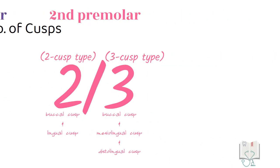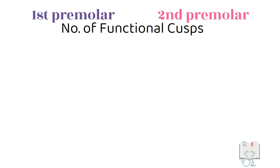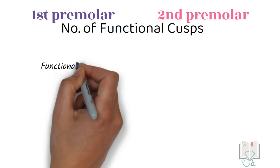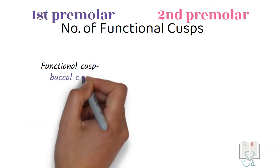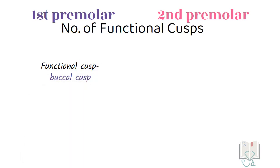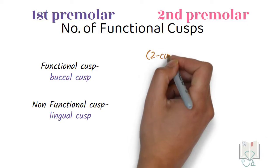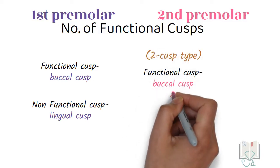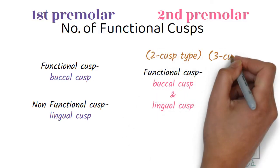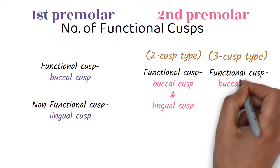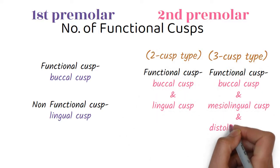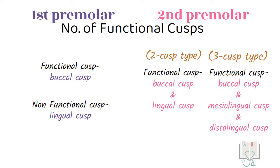Regarding functional cusps in the first premolar, only the buccal cusp is functional, as the lingual cusp is non-functional. Whereas in the second premolar, all cusps are functional with no non-functional cusps.